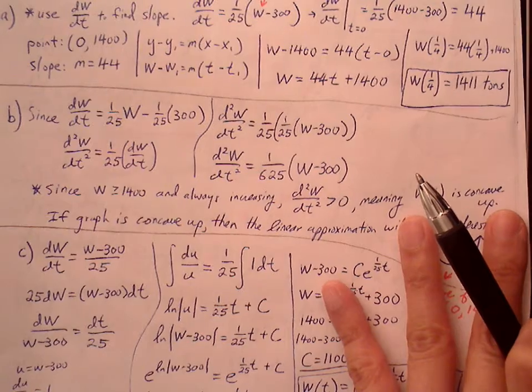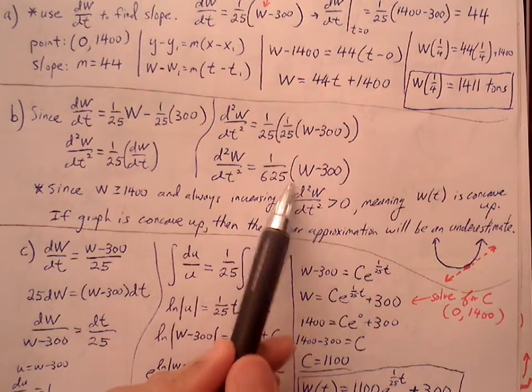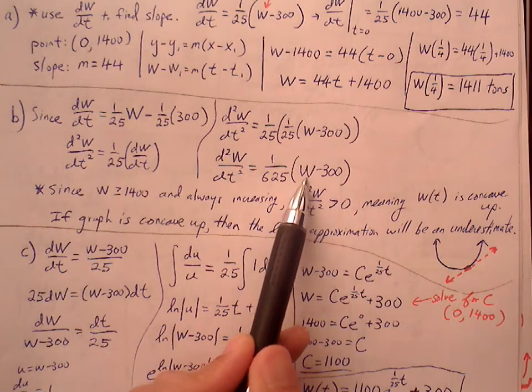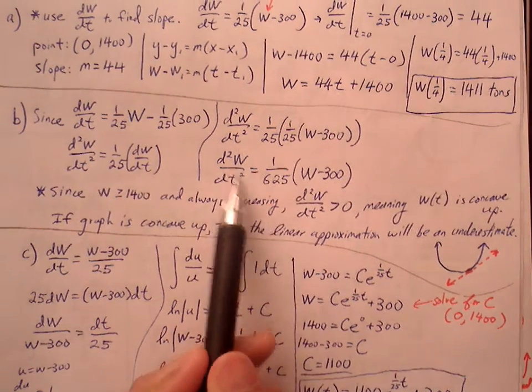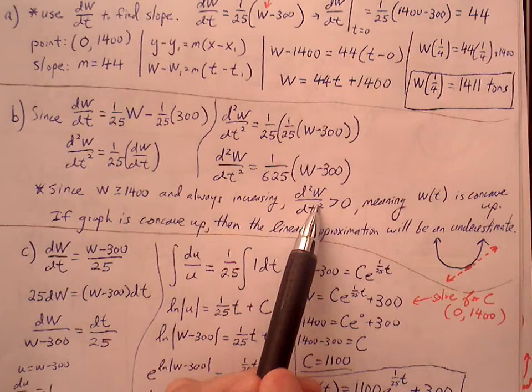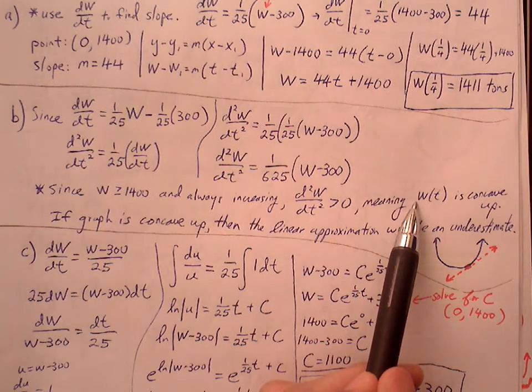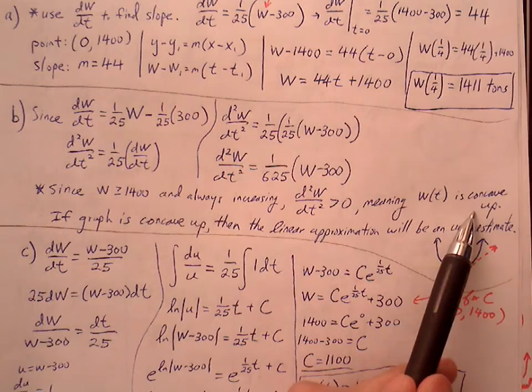So knowing that, we know that no matter what value W gets entered in, because it's always greater than or equal to 1400, we know that the second derivative value is always going to be greater than zero.